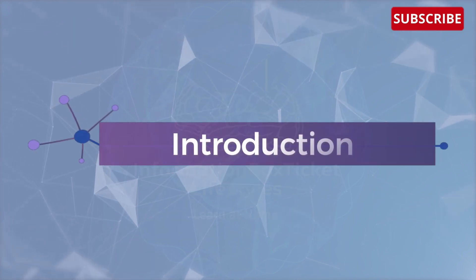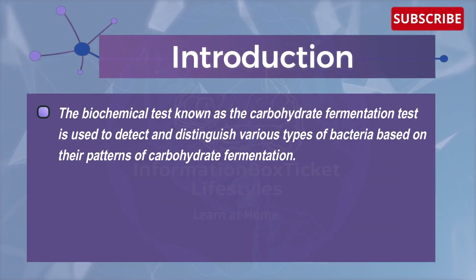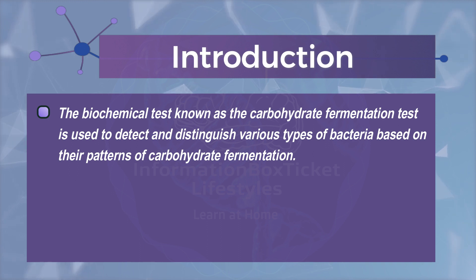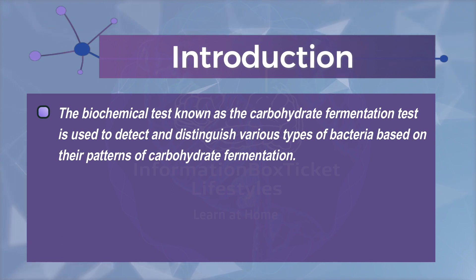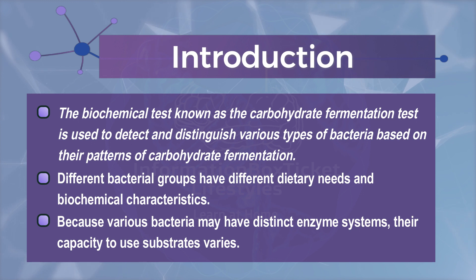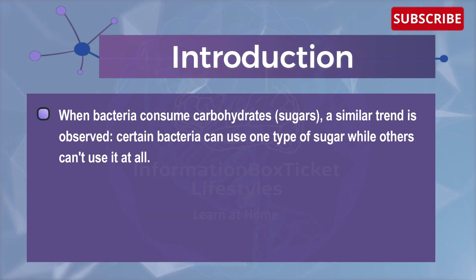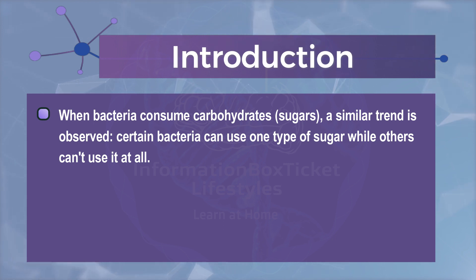Let's begin with the introduction of the Carbohydrate Fermentation Test. This biochemical test is used to detect and distinguish various types of bacteria based on their patterns of carbohydrate fermentation. Different bacteria have different dietary needs and biochemical characteristics. Because various bacteria may have distinct enzyme systems, their capacity to use substrates varies. Certain bacteria can use one type of sugar while others cannot use it at all.